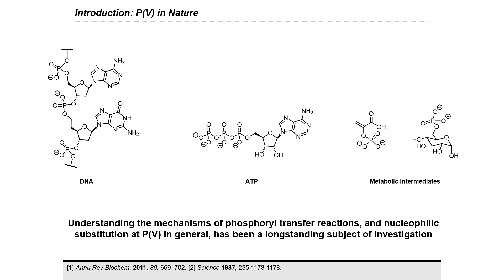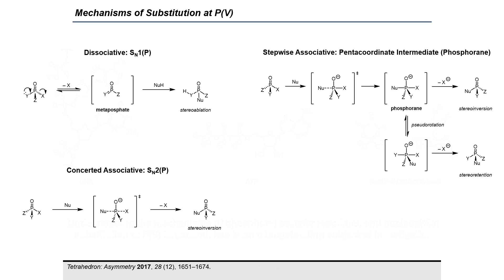Understanding the mechanisms of phosphoryl transfer reactions and nucleophilic substitution at phosphorus-5 atoms has been a long-standing subject of investigation. There are three types of mechanisms via which phosphorus-5 compounds can undergo nucleophilic substitution. Much like carbon, phosphorus-5 can undergo SN1 and SN2 type mechanisms. However, because phosphorus has d orbitals, a third mechanism is possible involving an sp3d hybridized pentacoordinate intermediate. Each of these mechanisms has been explored in the context of biochemical phosphorylation and synthetic organic chemistry.